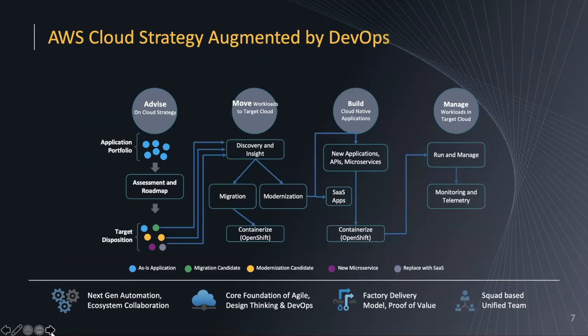How is AWS cloud strategy going to be augmented by DevOps? This is going to have flexible entry points. Let's think about a client situation where they have a large number of monolithic applications within the enterprise, built probably several years back — starting from mainframe to Visual Basic to Fortran to FoxPro and so forth. We know the way the application and technology landscape has evolved over a period of time.